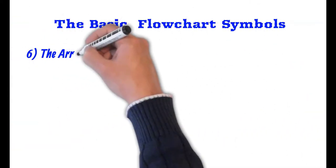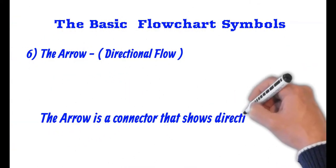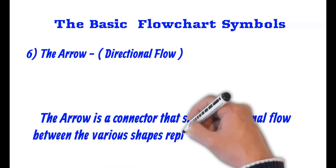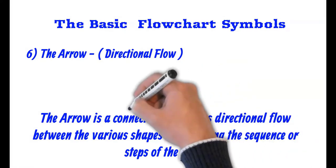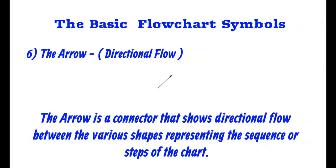The last symbol we'll discuss is the arrow or connector. It's also the directional flow. So the arrow is a connector that shows directional flow between the various shapes representing the secrets of steps in your flowchart.